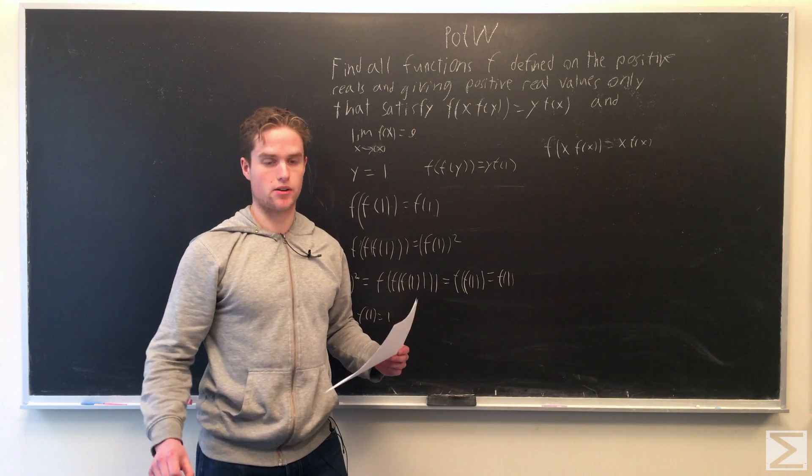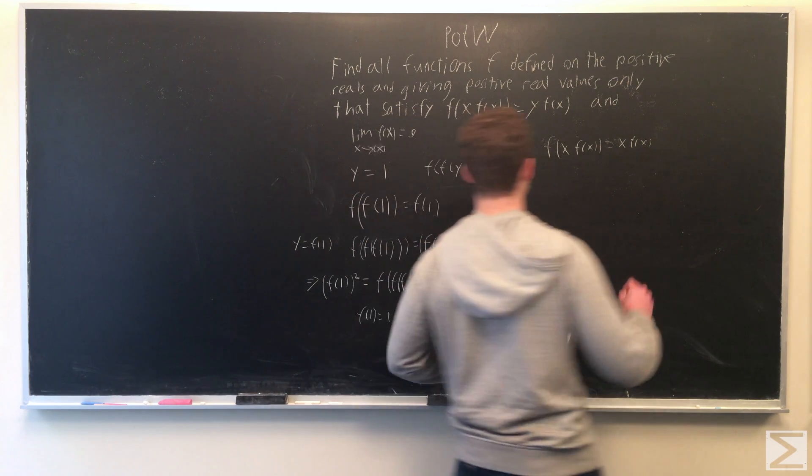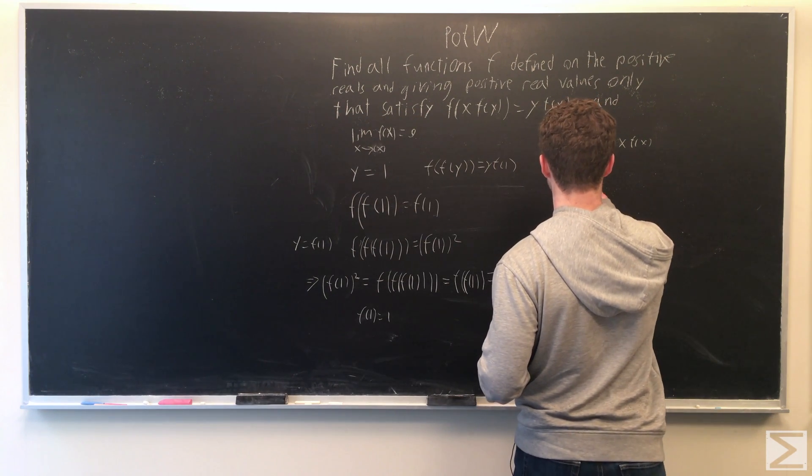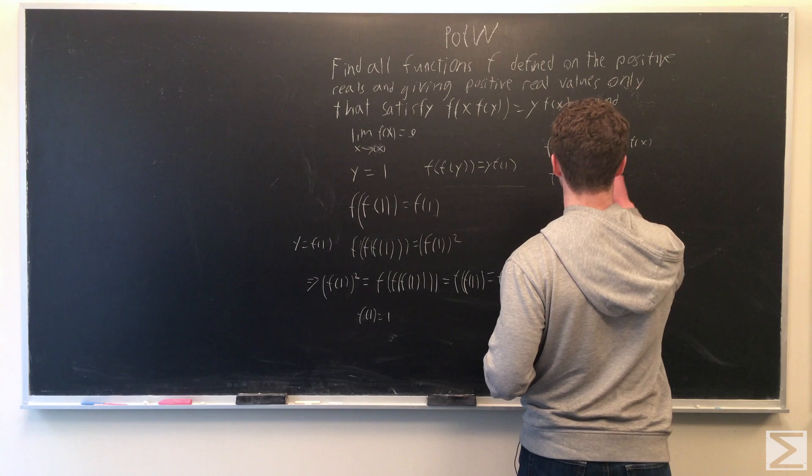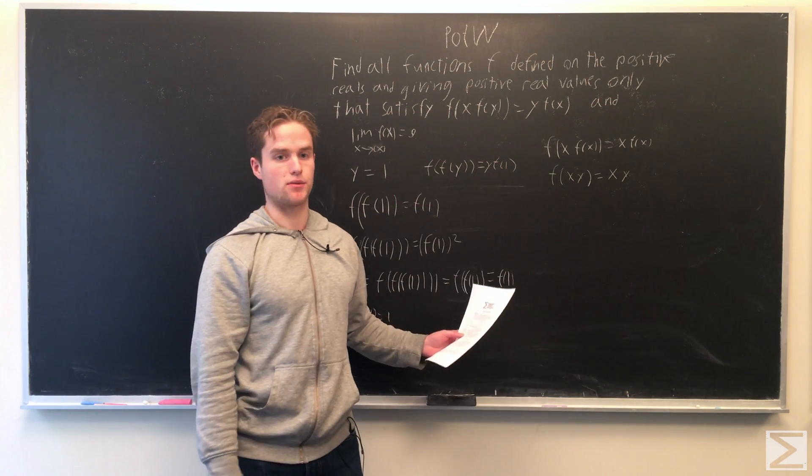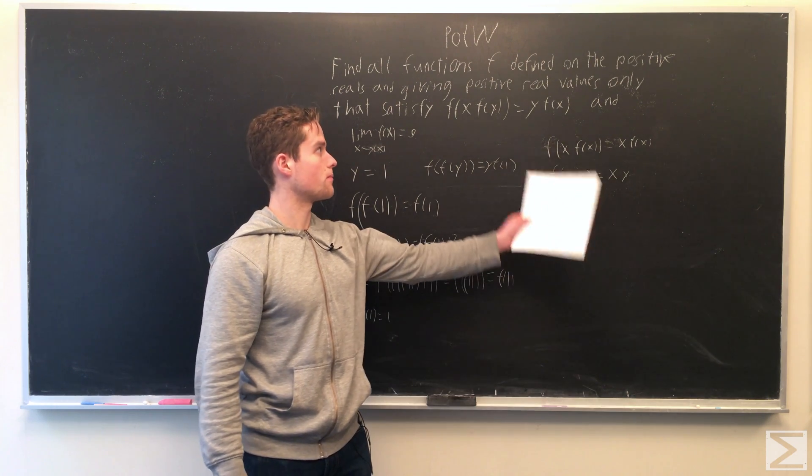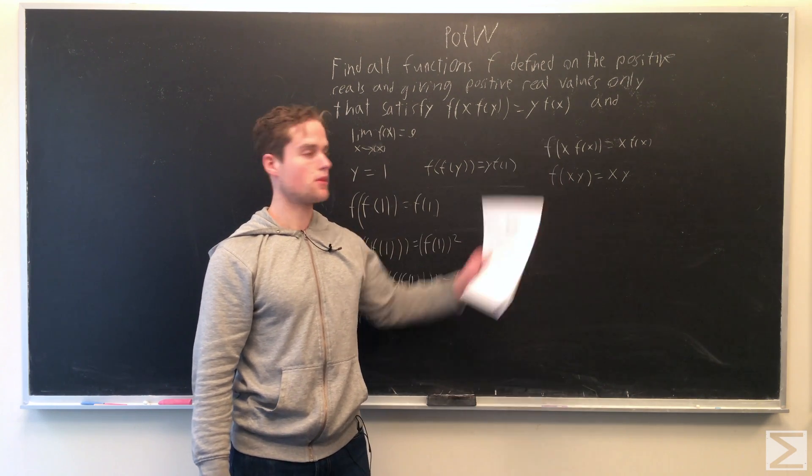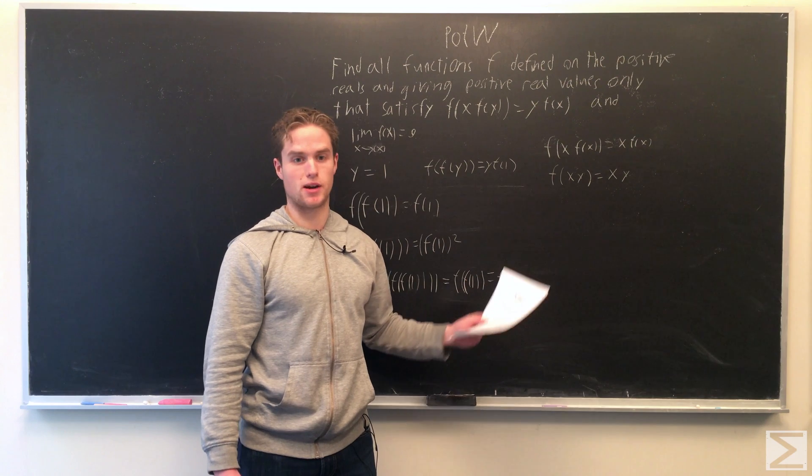Now note that if x and y are both fixed points, then f(xy) = xy. We get this from our original functional equation, which means xy is also a fixed point.